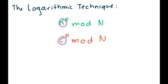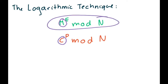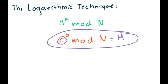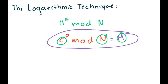So the message interceptor can plug the value of c into the expression c to the d power mod n, and know that the result must equal his original message m, because this is a decryption expression. What the message interceptor has essentially done is created an equation in which three known values exist and only one unknown value — which is d — exists. Rule of algebra: one equation, one unknown, you can solve for that unknown. So how is the message interceptor going to solve for that unknown decryption key d?